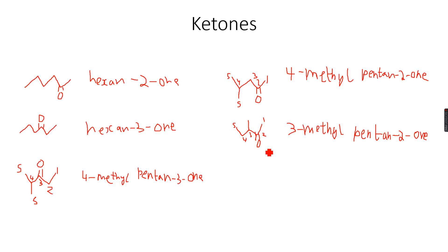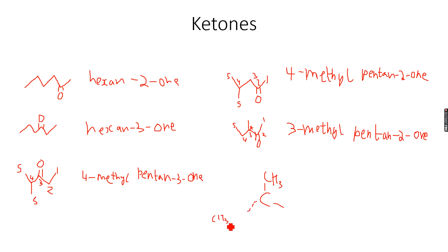This compound does not have any carbon-carbon double bond, so no geometric isomers. However, I can see one chiral center: this carbon atom is attached to a methyl group on one side, an ethyl group on another side, a hydrogen on one side, and the ketone group (COCH₃) on another side. Since this carbon atom is attached to four different groups, it is a chiral center.